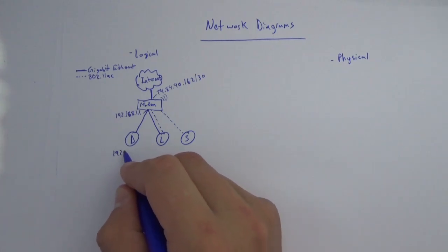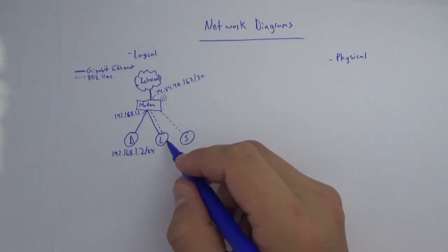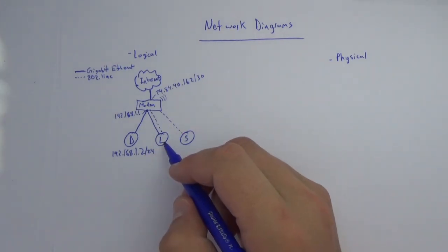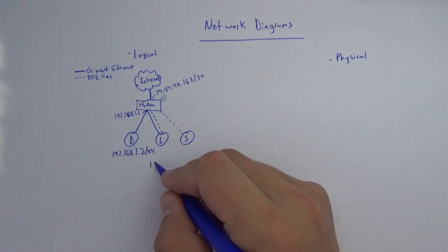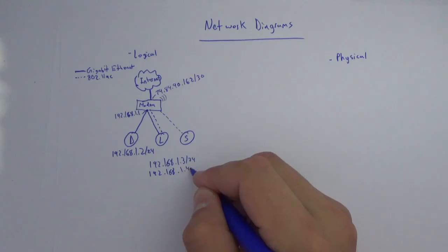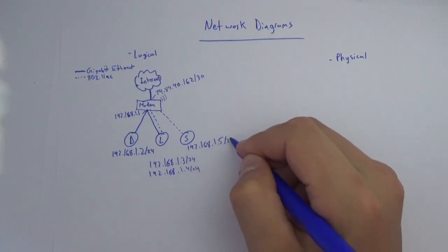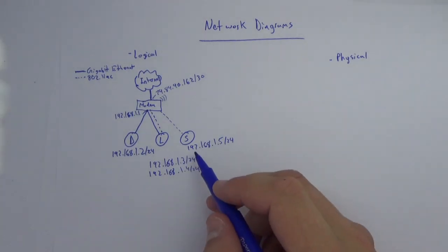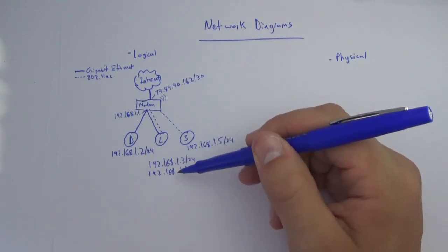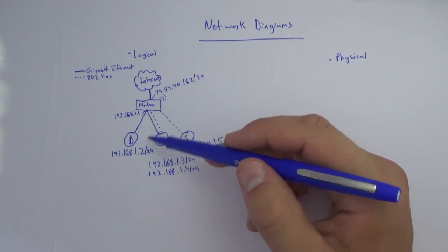We'll give the desktop 192.168.1.2/24, which would be common. The laptop and smartphone should also get IP addresses. Interestingly, the laptop might have two different IP addresses — one handed out by the wired connection and one by the wireless connection — so it might have 192.168.1.3/24 and 192.168.1.4/24. The smartphone is probably just going to have 192.168.1.5/24.